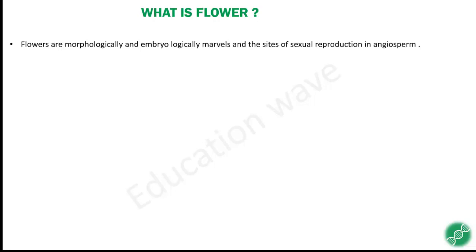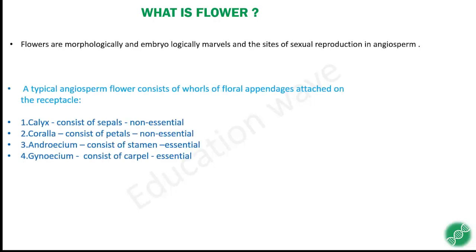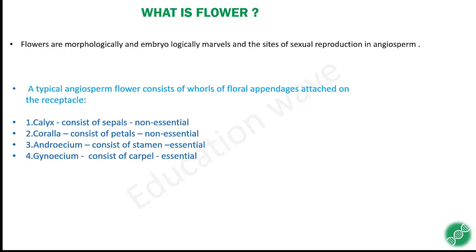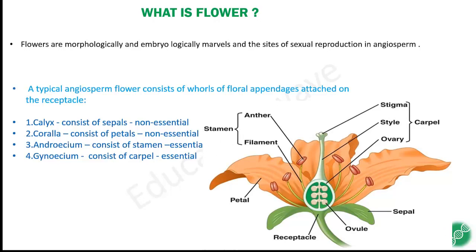It is a site where sexual reproduction occurs, which is the cause of flowering plants. A typical angiosperm flower consists of whorls of floral appendages attached on the receptacle. We can see the receptacle here, and the angiosperm flower parts are attached to it.